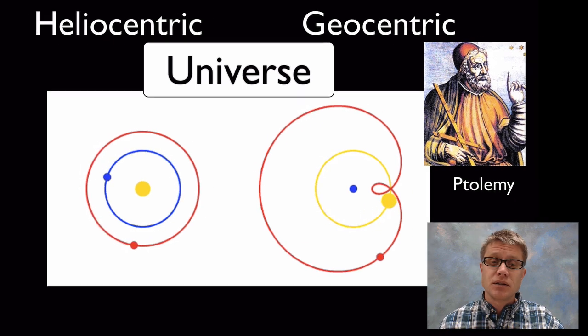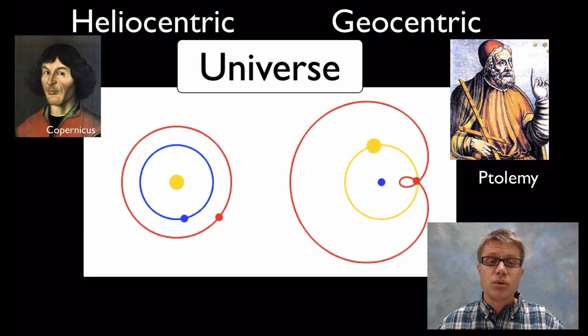But what they didn't have was a lot of evidence. The first one to put forward an idea of a heliocentric model was Copernicus, Nicholas Copernicus. We sometimes call it the Copernican revolution by putting the sun at the center.